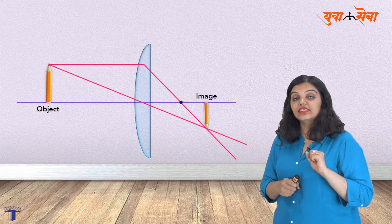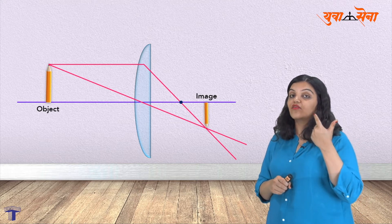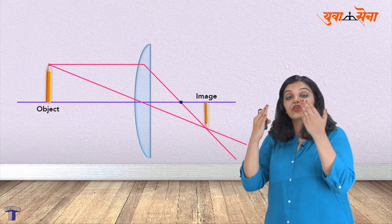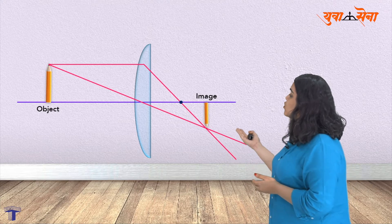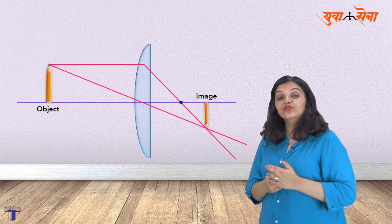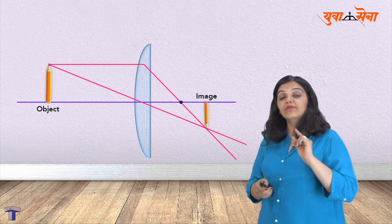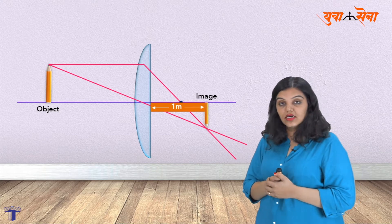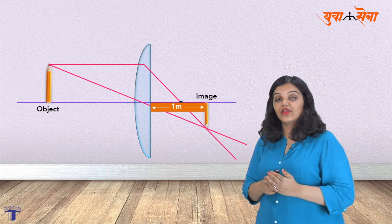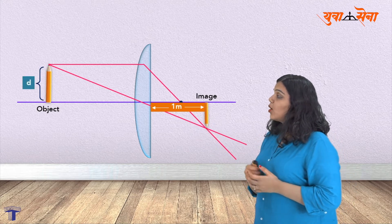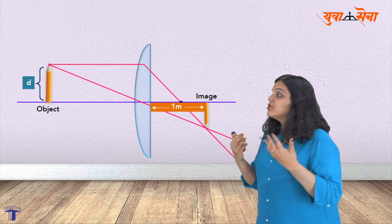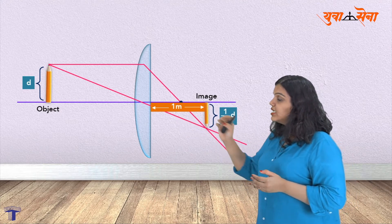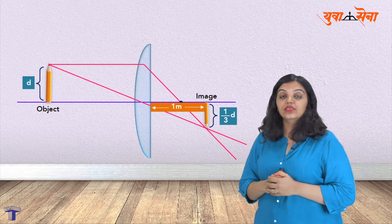Now be careful — in our problem it is given that the image is real and therefore it's inverted, so I have drawn a real and inverted image. They have also told us that the image is going to be one-third the size of the object, so I have drawn a smaller image. The image distance is one meter behind the lens. If the object is d units long, then the image is 1 upon 3 d units long.